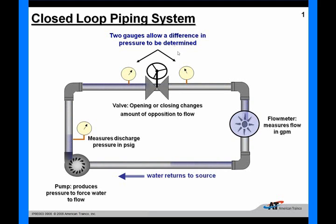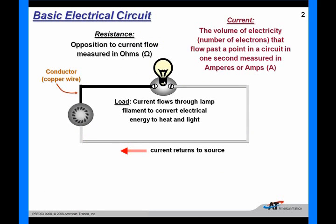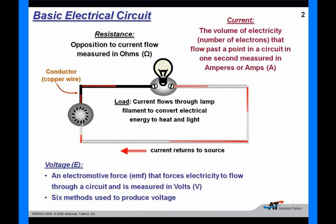We call that the pressure drop across the valve. We could change that pressure drop by changing the position of the valve — by opening or closing the valve, we change the pressure drop across it. An electrical circuit works the same way. In an electrical circuit, we must have a source of voltage pressure. Voltage is the electromotive force that causes the electrical current to flow.